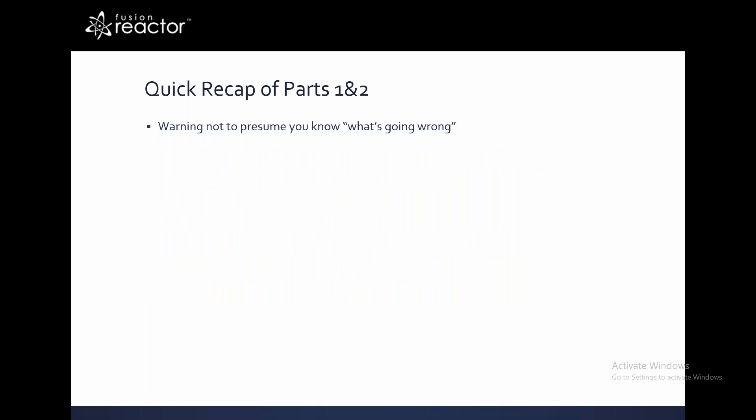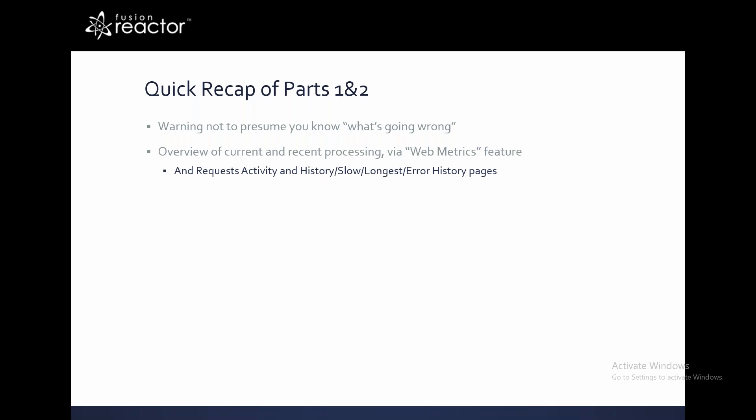For those coming to this for the first time: in part one, I emphasized not presuming you know what's going wrong because presumptions often lead you to look in the wrong places. I showed how with FusionReactor you can quickly see what's going on currently and recently — especially with the web metrics feature. I also covered the requests page, history of the 100 most recent requests, slow requests, the 100 slowest overall, the error history page, and how FusionReactor tracks CPU, memory, and garbage collection.